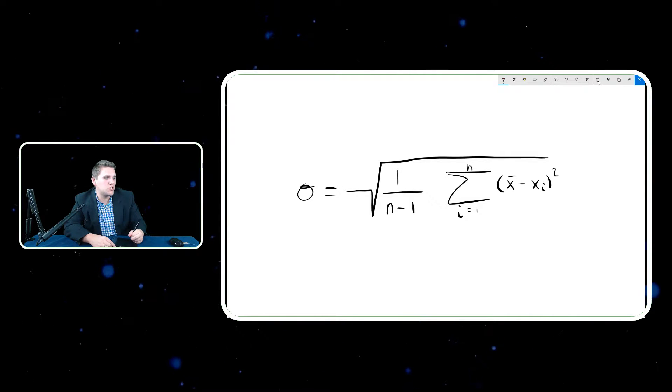Step two would be to find the distances from the average. Step three would be to square all of those numbers. Step four would be to add up all those numbers and divide by n minus one. And then step five would be to square root.